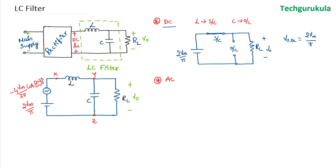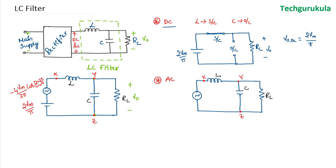For the AC part, the AC model circuit has nodes X, Y, and Z. The AC source VAC = −4Vm/π · cos(2ω₀t). The output voltage VYZ is measured across nodes Y and Z. Using a voltage divider, the output voltage equals the impedance across YZ divided by the sum of impedance across XY and impedance across YZ, multiplied by VAC.